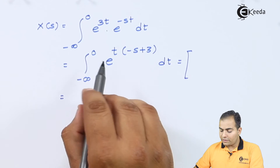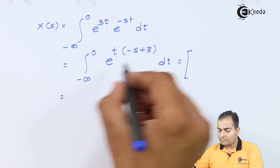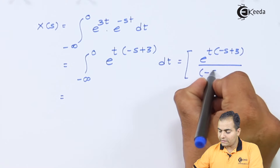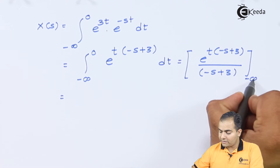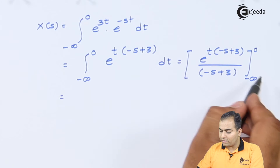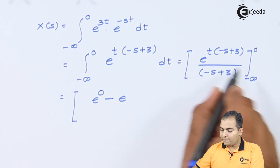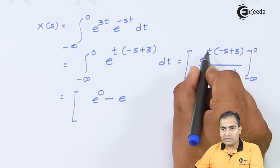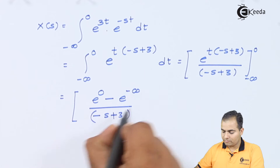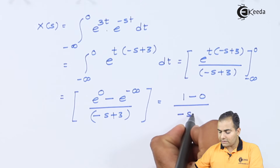After integration, the constant part present in the power moves to the denominator. So the result is e^(t(-s+3)) divided by (-s+3), evaluated from minus infinity to 0. Substituting the limits: at t = 0, we get e^0 = 1; at t = -∞, e^(-s+3)·(-∞) = 0 (when the ROC condition is satisfied). So we get 1 divided by (-s+3), and e^(-∞) = 0, leaving us with 1 over (-s+3).